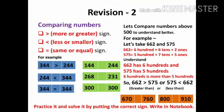Moving further, here you can see revision of comparing numbers by using signs. We can compare numbers as greater, smaller, or equal. For example, 344 is greater than 244, or we can say 244 is smaller than 344, and 344 is equal to 344.